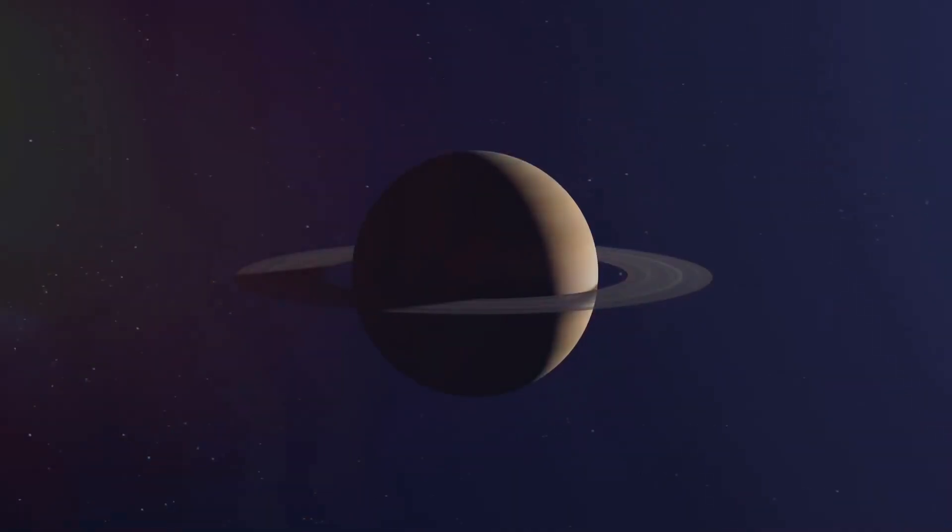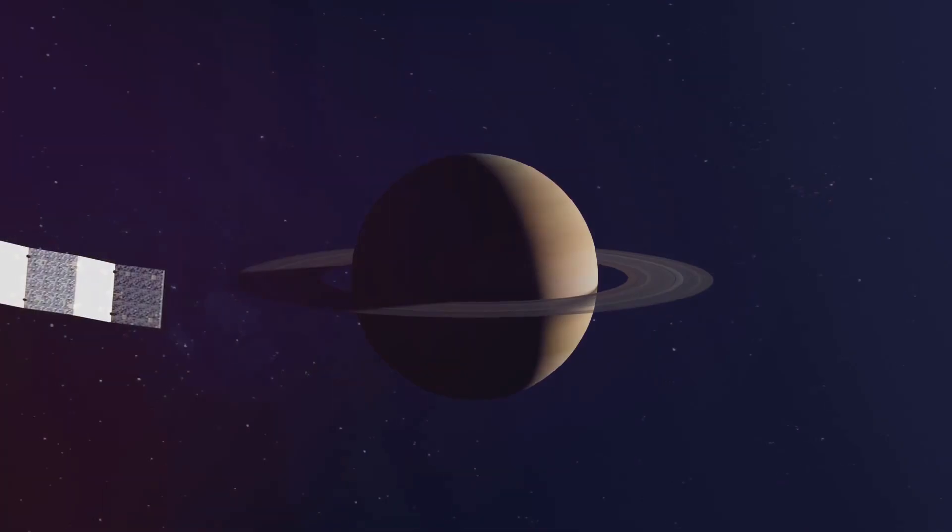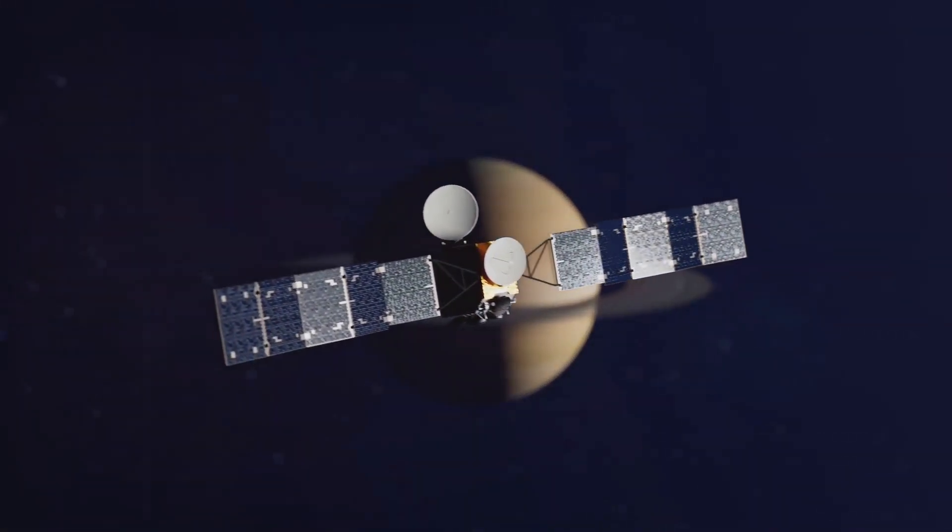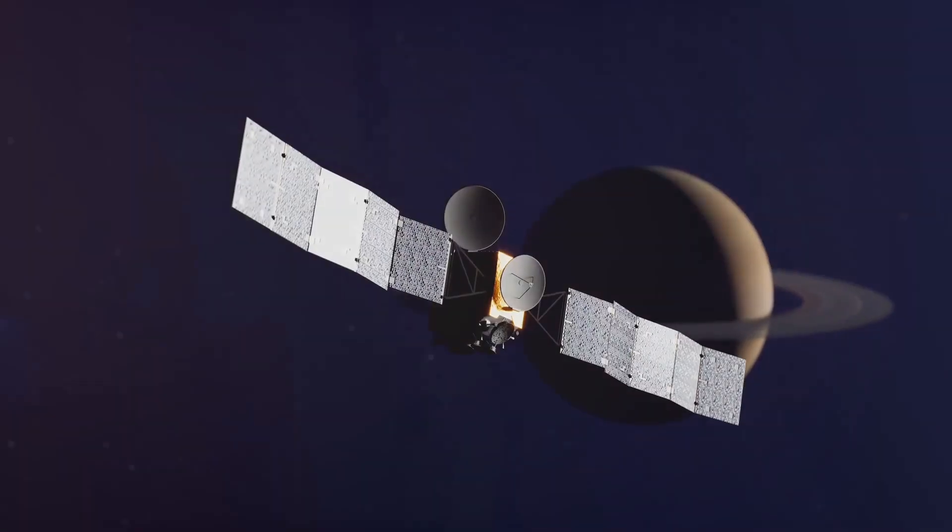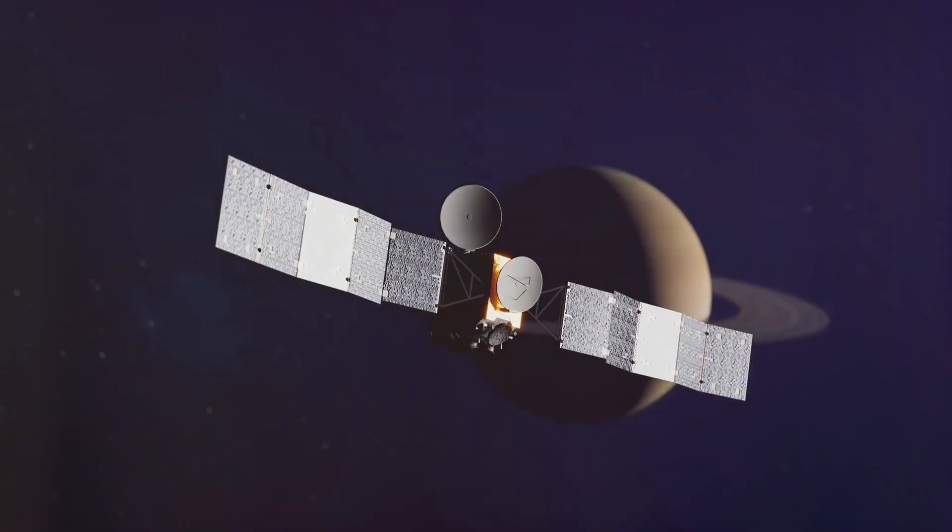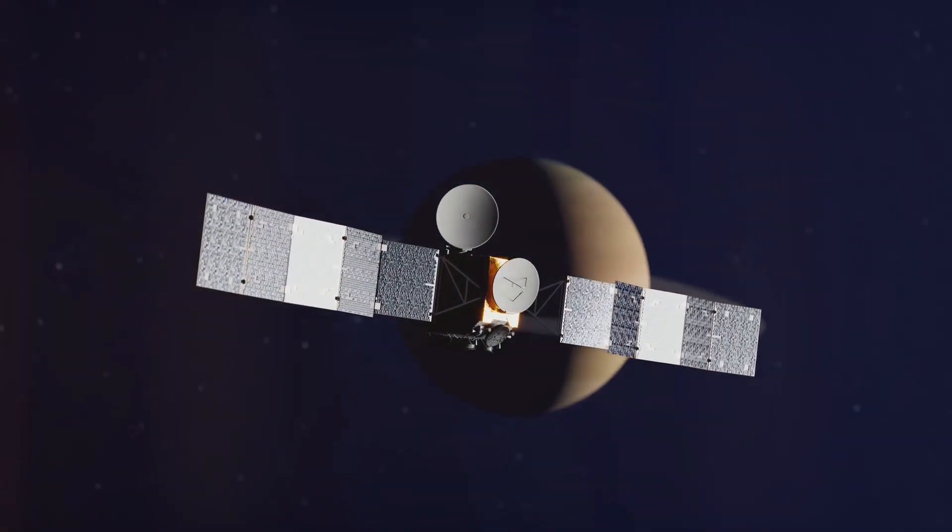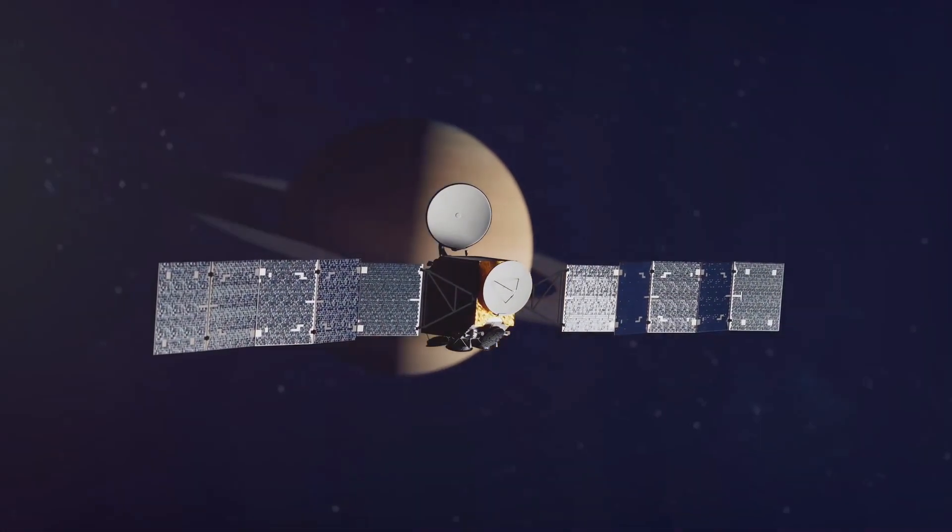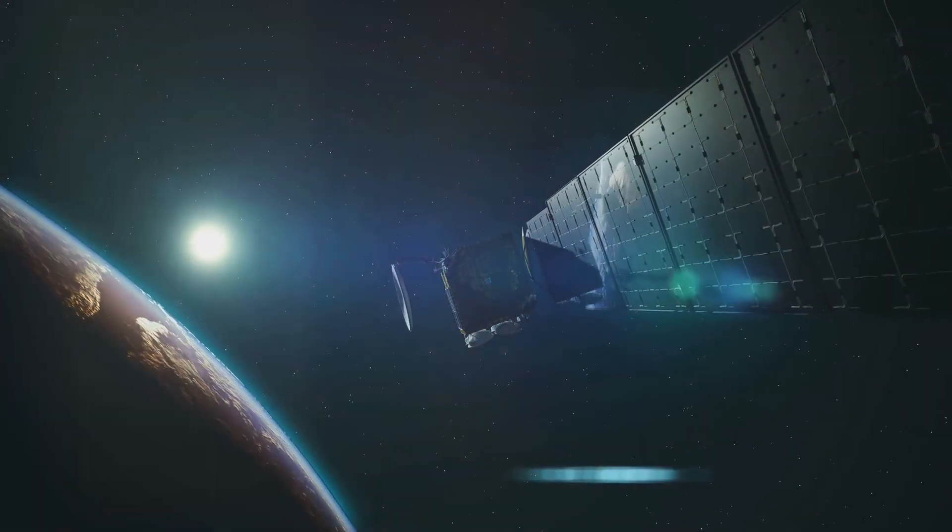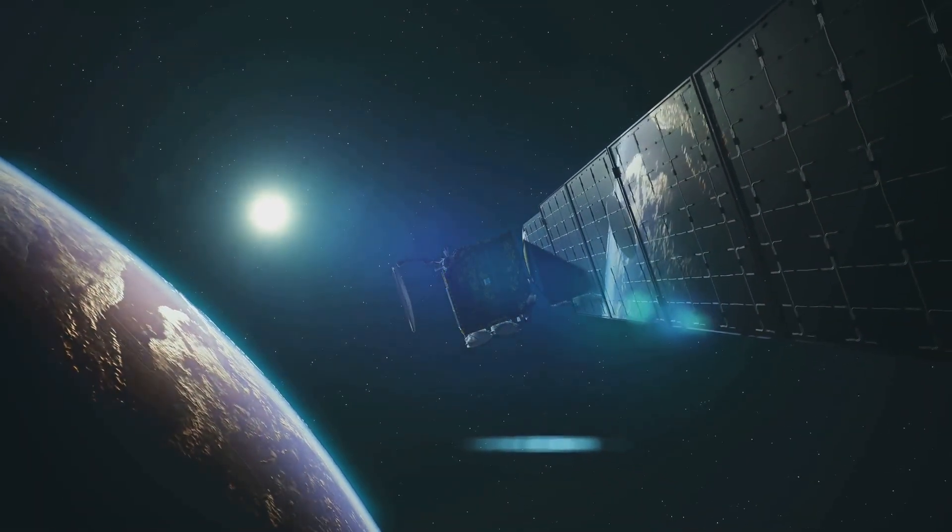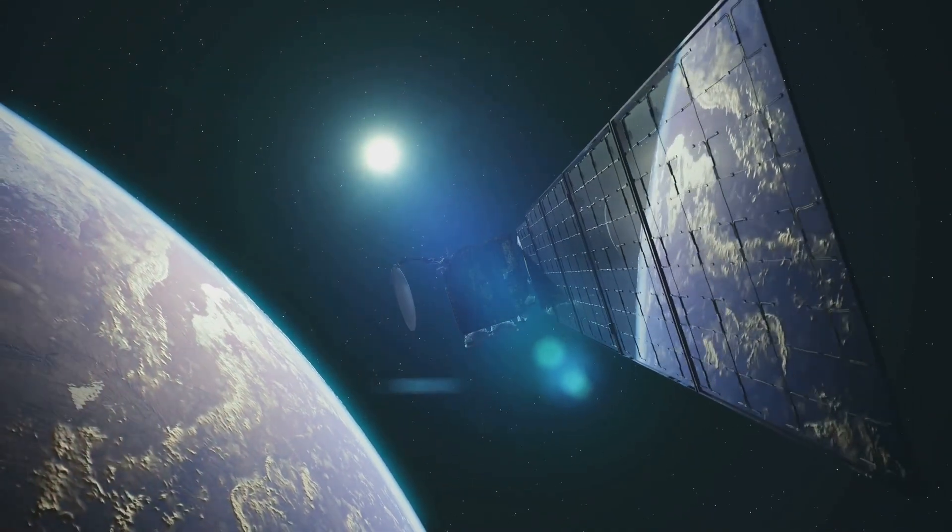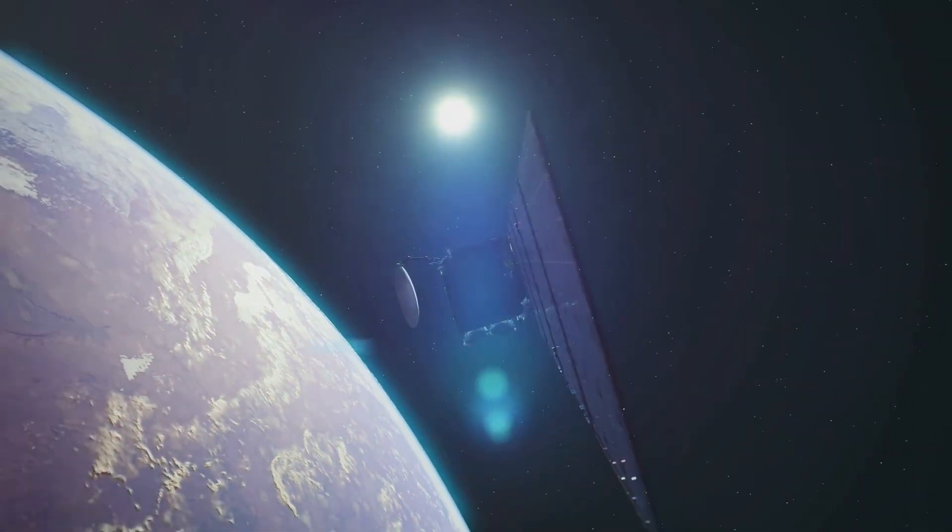But our quest for solar knowledge doesn't stop at the Earth's surface. We've also taken to the skies, launching a fleet of spacecraft that orbit high above our planet's atmosphere. Unfettered by the distortions of Earth's atmosphere, these sharp-eyed sentinels offer an unrivaled view of the sun. They track its every move, monitoring its activity around the clock and capturing stunning images of our star in a multitude of wavelengths.